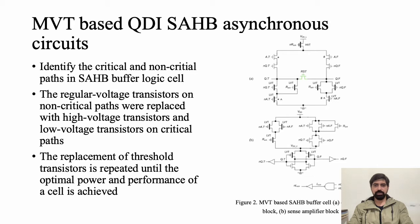For MVT-based QDI-SAHB asynchronous circuits: the original QDI-SAHB cells were implemented at 65nm technology, and implementing the same design at 40nm without modifications results in performance loss due to deep submicron effects. To apply the MVT technique, all transistors were first replaced with high voltage threshold transistors to reduce overall power consumption. Then, transistors on the critical path were replaced one by one with low voltage threshold transistors to increase switching speed, resulting in an optimal margin of threshold transistor usage in SAHB logic cells.